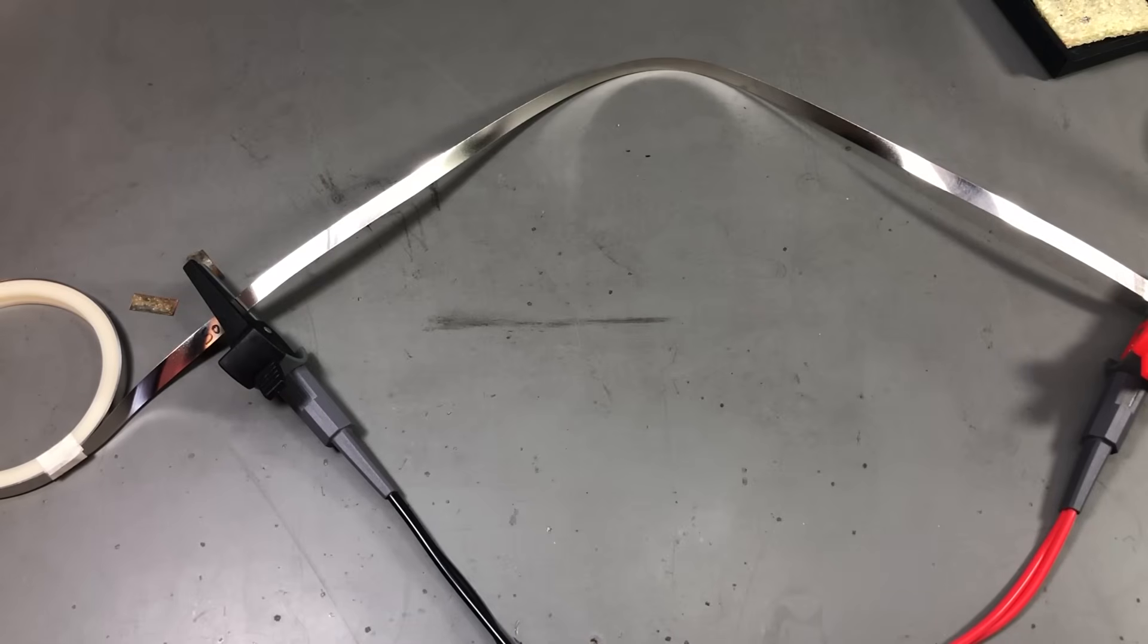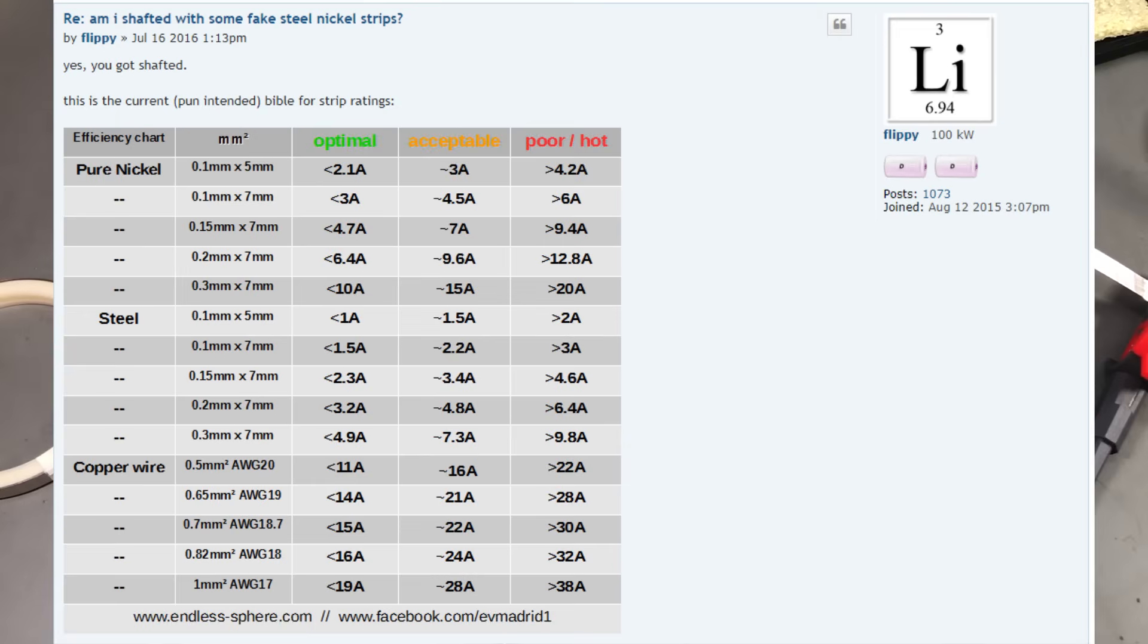There are entire forum threads online on the subject, so it should be easy to find a reference value from someone who measured some real pure nickel strips and published the results. They even have these charts on the forums that can be used as a general rule of thumb of what is safe to use and up to what currents, but I think they are very conservative in this chart and are referring to continuous currents with minimal temperature increase.